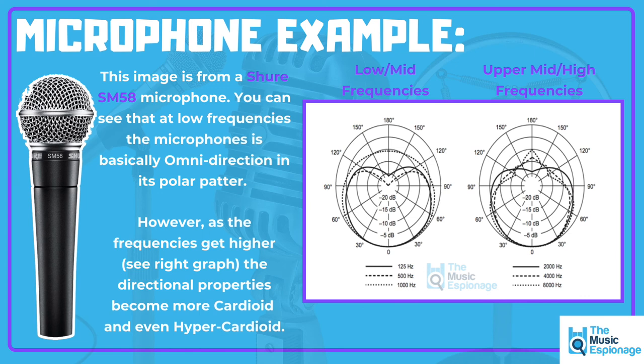The SM57 and SM58 are basically the same microphone, just without the grill on top. They're really good for recording live vocals on stage, a snare drum, or a hi-hat. The cardioid pattern rejects sound from the rear. So if you're pointing the mic at the hi-hat on a drum kit and position it correctly, it will reject sound from the snare, floor toms, and kick drum, giving you a much better close mic recording of that hi-hat.